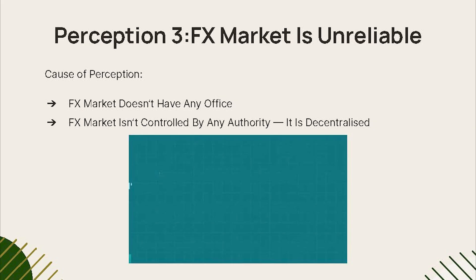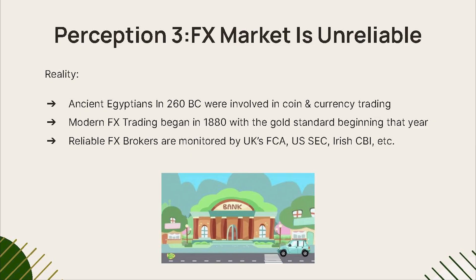The third perception is that the Forex market is unreliable. It's a valid concern — the world's largest market has no specific headquarters because it is a decentralized market, not controlled by any single organization or entity. To understand its reliability, consider its history: ancient Egyptians in 260 BCE were trading coins and currencies, and the world's first modern Forex market was created around 1880 AD with the gold standard. You can trade reliably by using brokers authorized by agencies such as the UK FCA, the US SEC, and the Irish CBI.